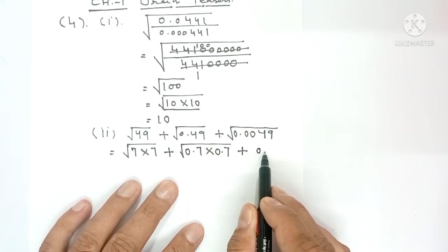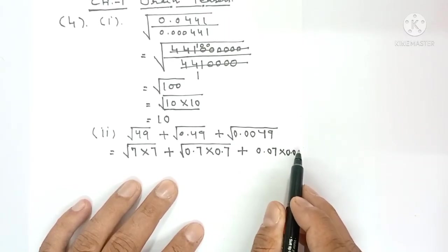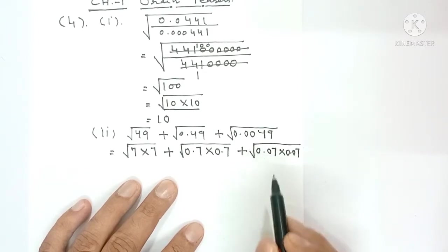And 0.0049 equals 0.07 times 0.07, write that under the root as well.